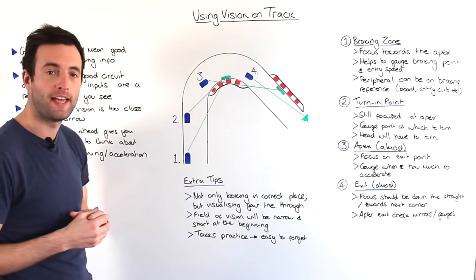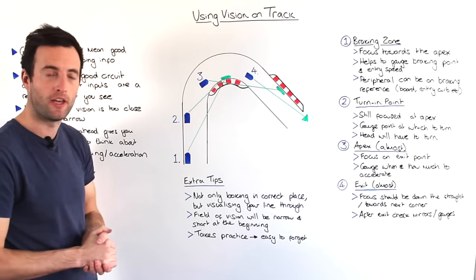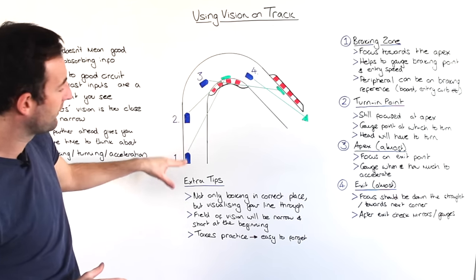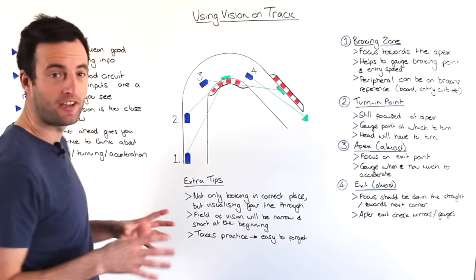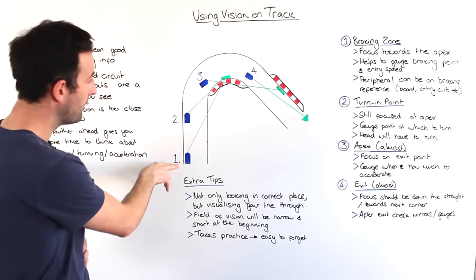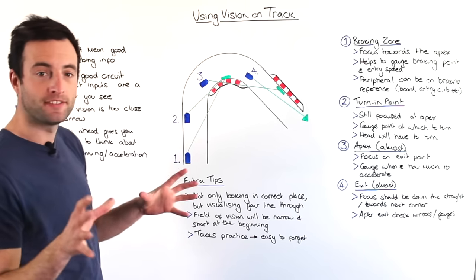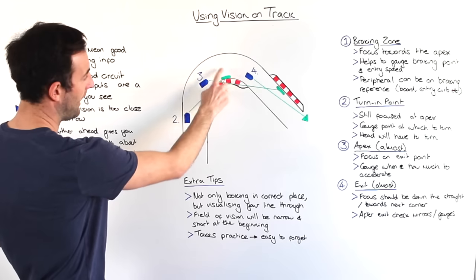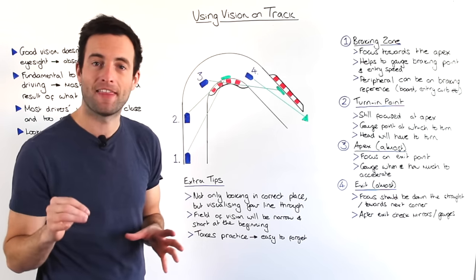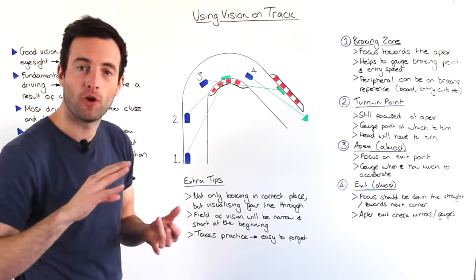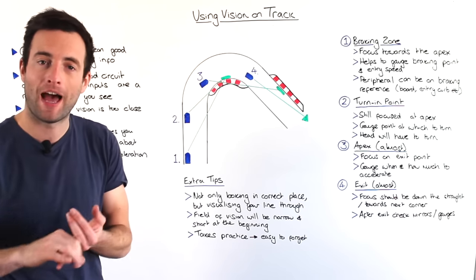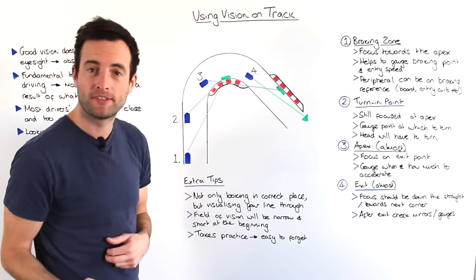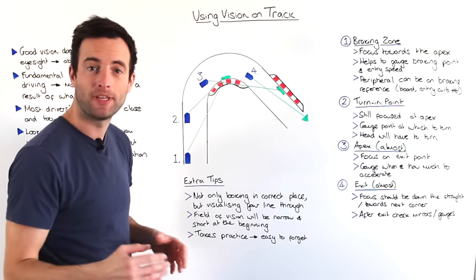Here we have a typical right-hand corner. I've split it up into four sections and you can see that this blue rectangle is a car. Point number one here is the braking zone. We should be focused — have our attention already at the apex. This way you know how much to brake and you know how much speed to take into the corner. So we could be looking 200 meters ahead of ourselves as we enter the corner.